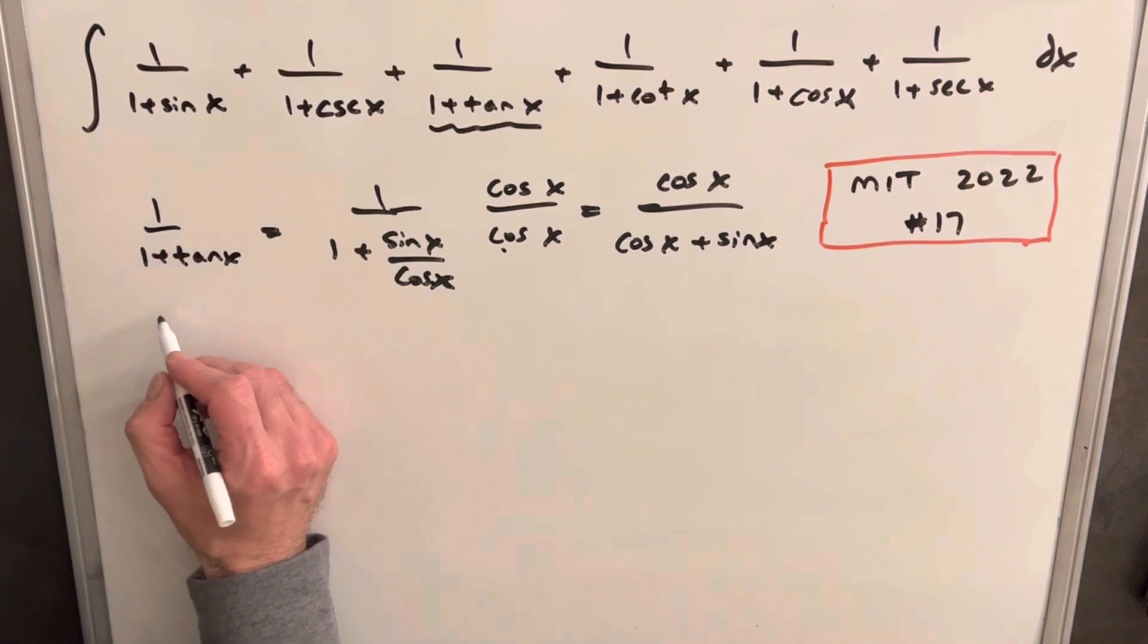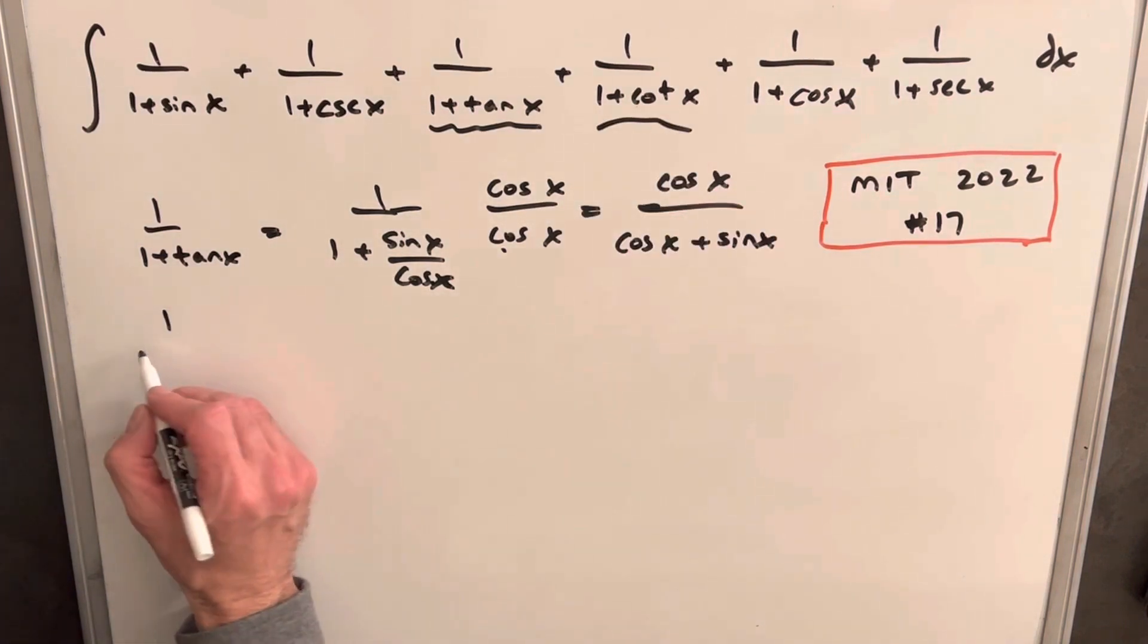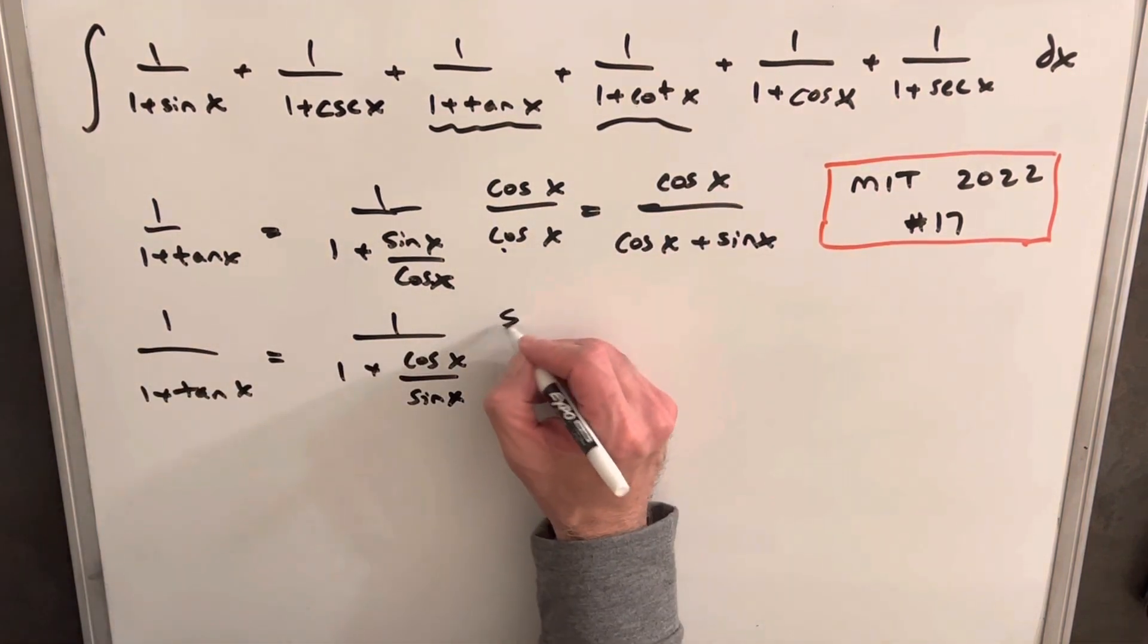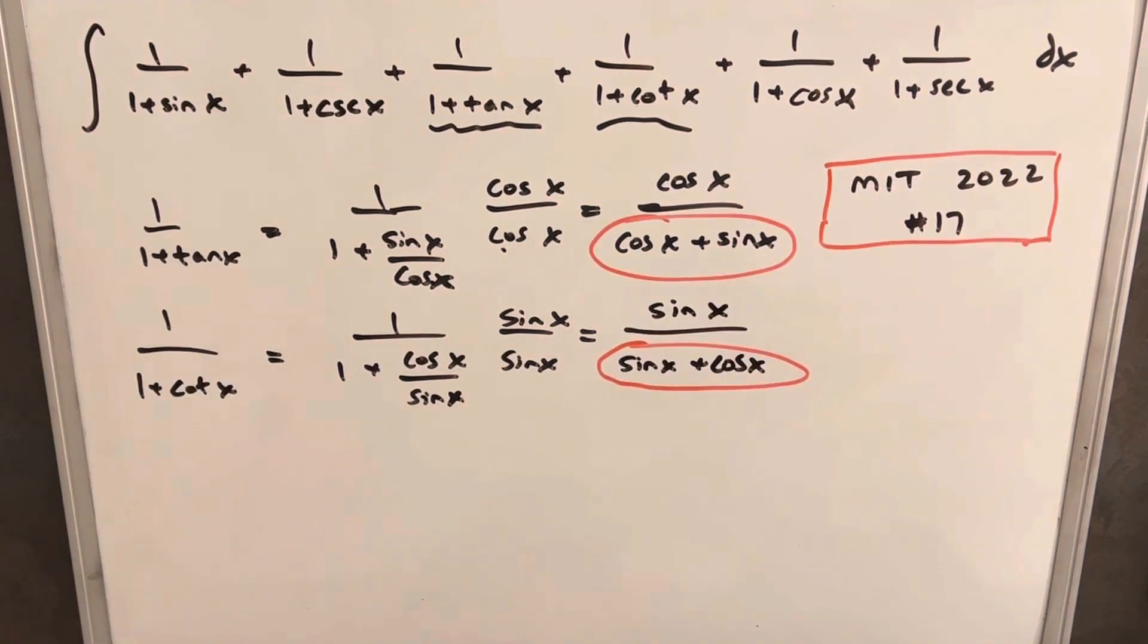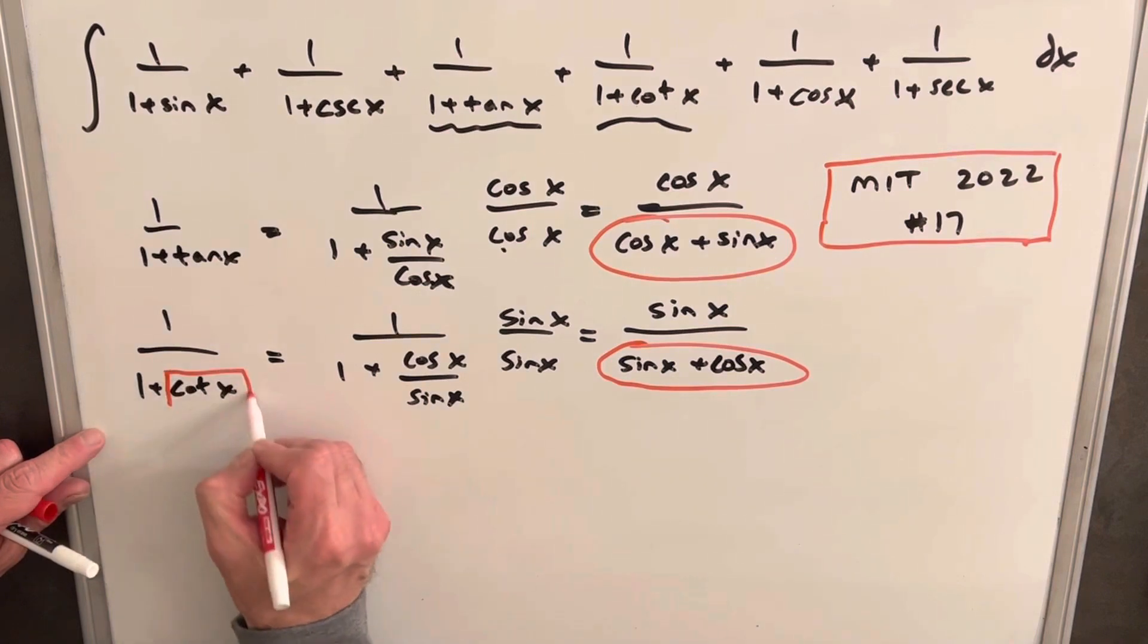Now we're going to do the exact same thing with the cotangent, our term here. I'm going to multiply it by sine x over sine x. Sorry, this is supposed to be a cotangent here.